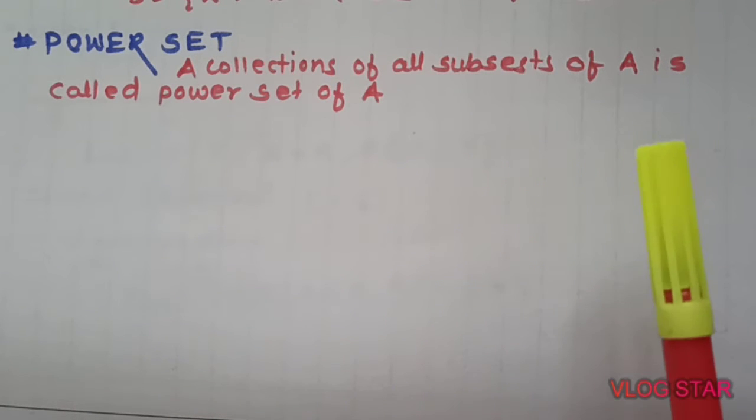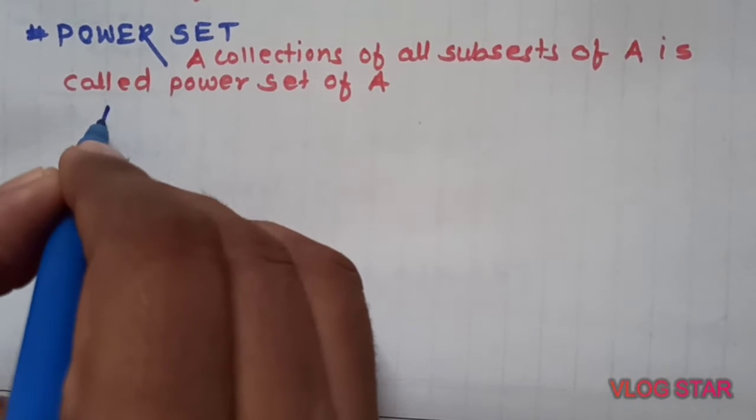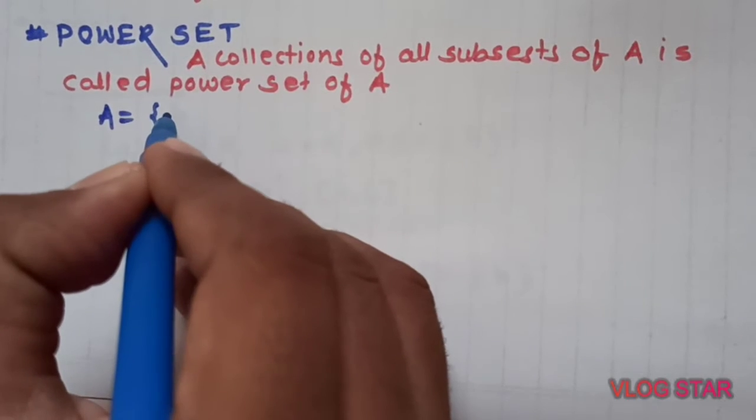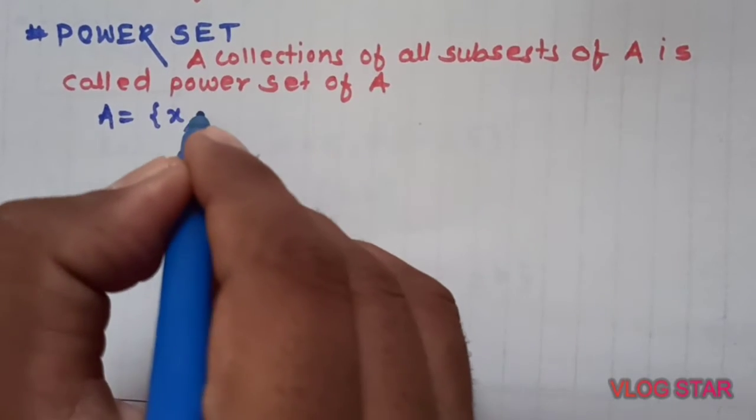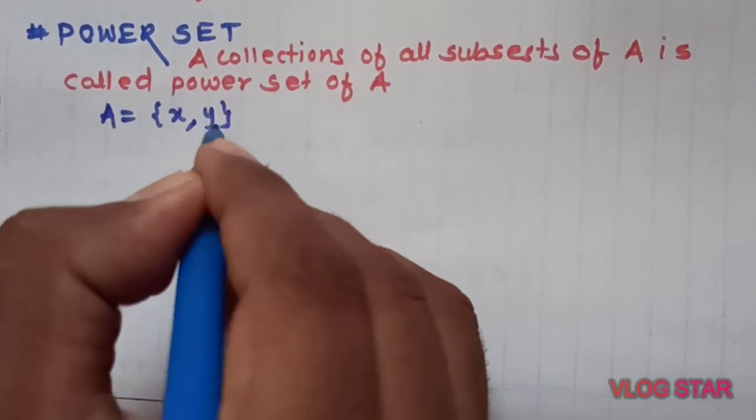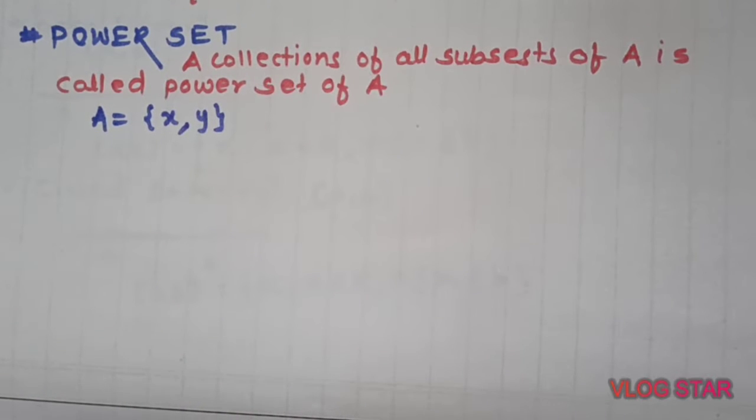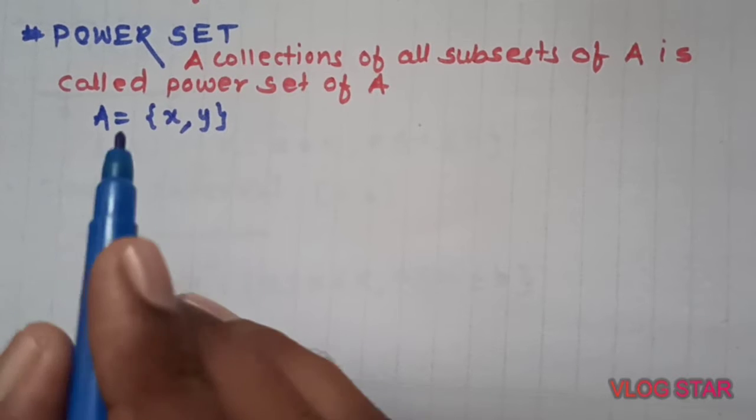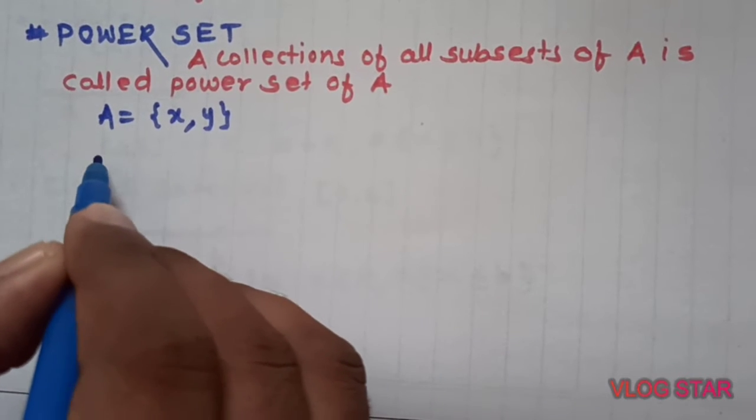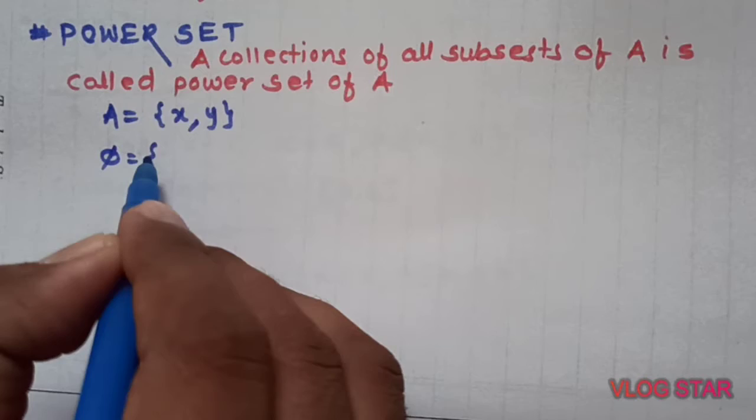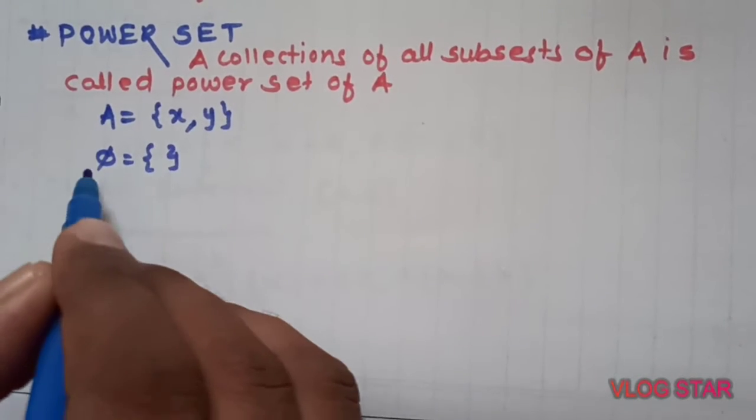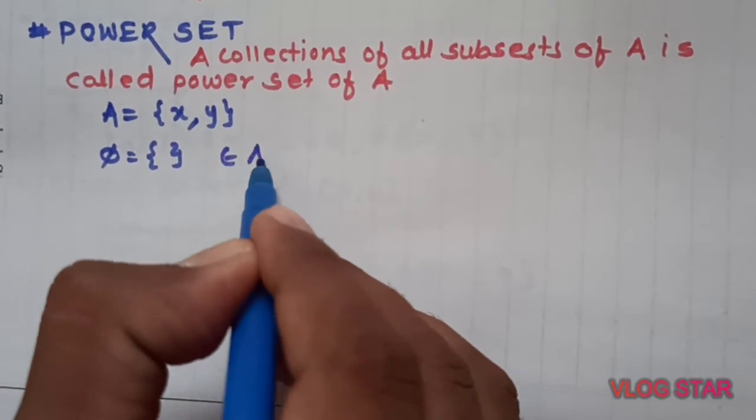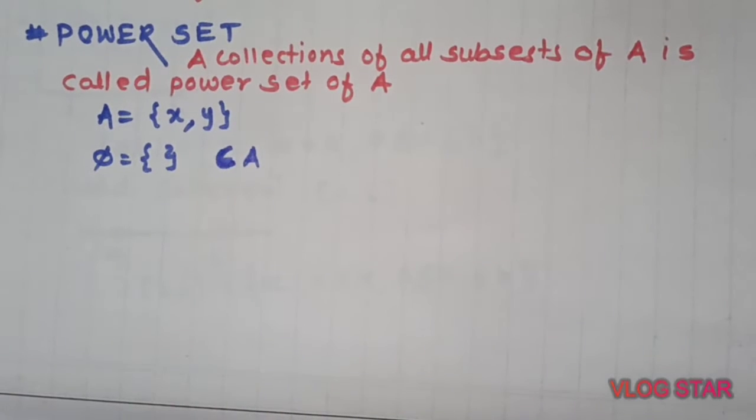A collection of all subsets of a given set A is called the power set of that set. You can take any set A and try to write all subsets of A. As you know that empty set is always a subset of any set. Phi is a subset of A.